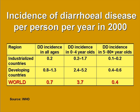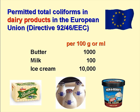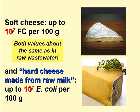Now a word on microbiological requirements for foods. This is important because we as engineers are taught that drinking water shouldn't contain any coliform bacteria per 100ml, so we tend to think that any coliform at all is really bad. But food microbiologists take a somewhat different view. This slide shows the maximum number of total coliforms permitted in some dairy products in the European Union: butter — 1,000 per 100g; milk — 100 per 100ml; and ice cream — 10,000 per 100g. For soft cheeses, such as Brie or Camembert, the maximum number of faecal coliforms is 10⁷ per 100g, and for hard cheese made from raw milk, such as cheddar, it's up to 10⁷ E. coli per 100g. Both these values are about the same as in raw wastewater.